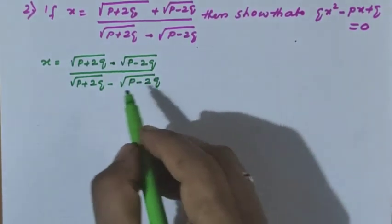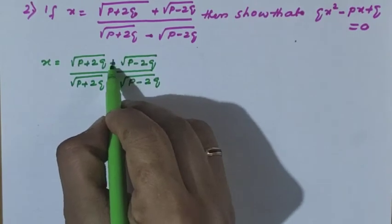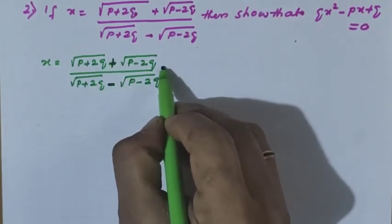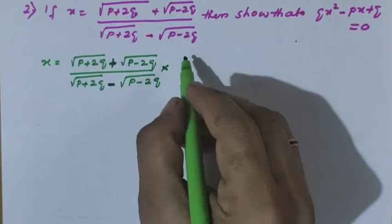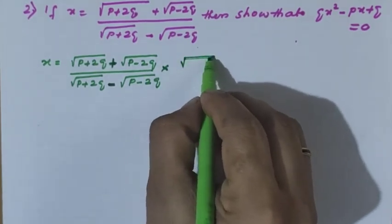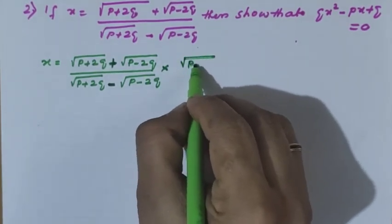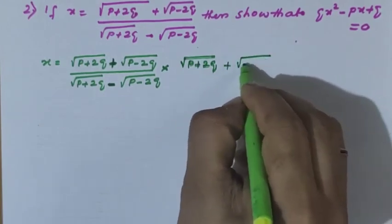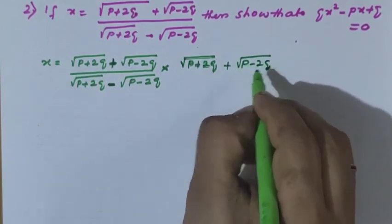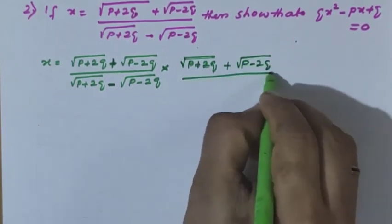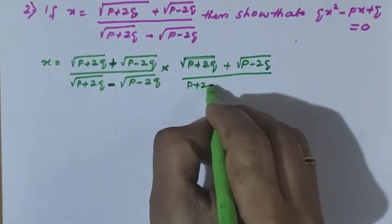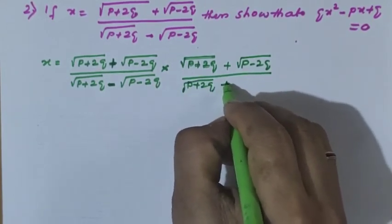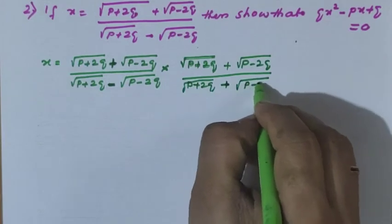What should we multiply and divide? Here minus sign is in the denominator, so multiply and divide with plus. So we multiply by root of p plus 2q plus root of p minus 2q divided by root of p plus 2q plus root of p minus 2q.